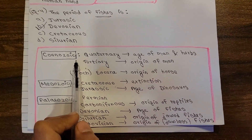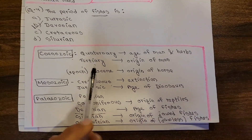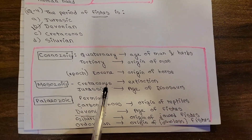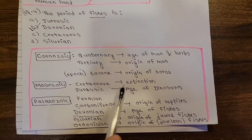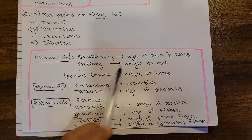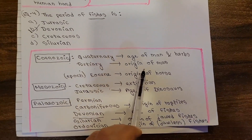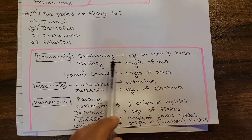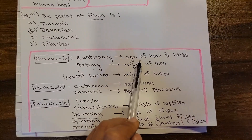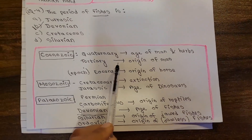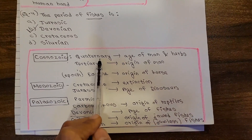For example, the Cenozoic era is called the age of man, and is also known as the age of herbs or birds. We need to remember these names associated with each era — age of man, age of reptiles, age of fishes — and associate them correctly with the corresponding geological era.